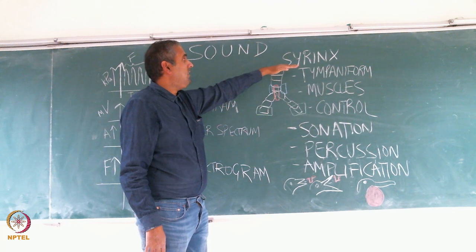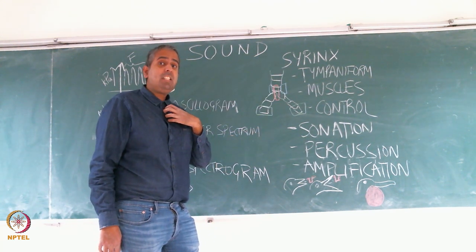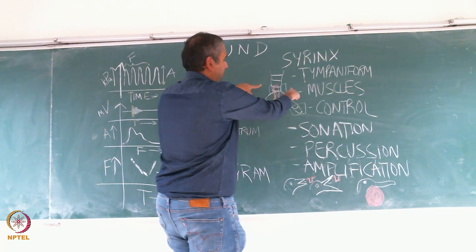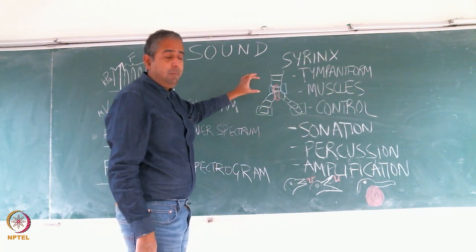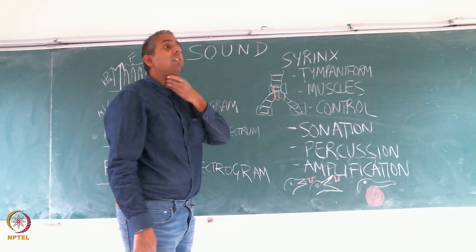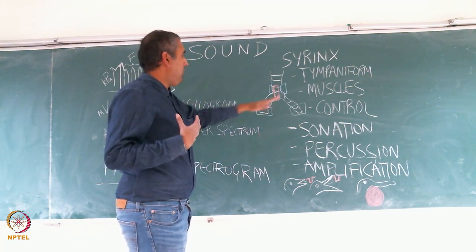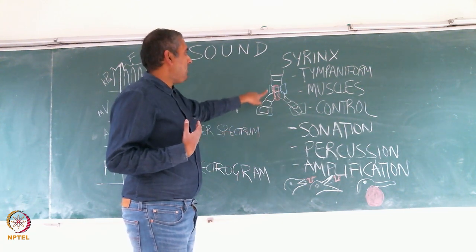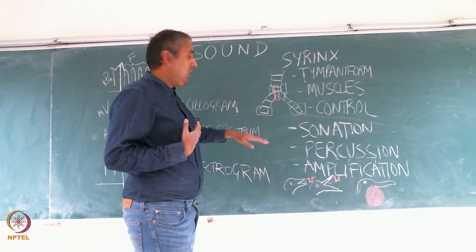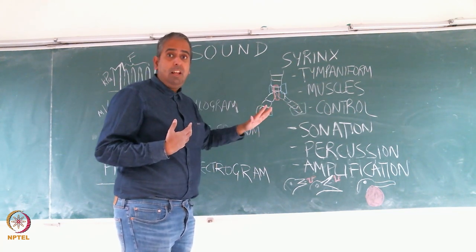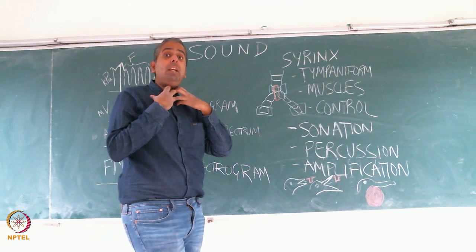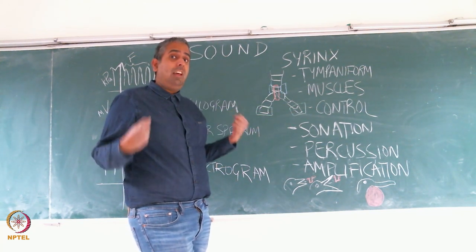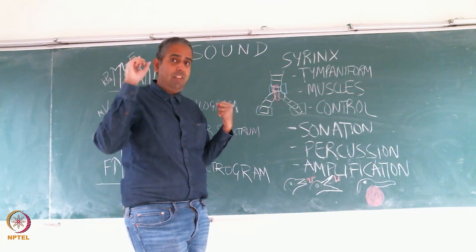The syrinx is present a lot lower down. In many species such as ducks and geese, you can see it here — this is the trachea, the windpipe, which bifurcates into bronchi that go to each lung. Now some birds have the syrinx in the trachea. There are other birds that have the syrinx in the bronchi. If you have your syrinx in the trachea, you have only one vibrating structure. But if you have your syrinx in the bronchi, you have two, and they can be controlled independently of each other — that's an important thing to remember.